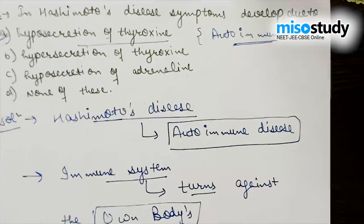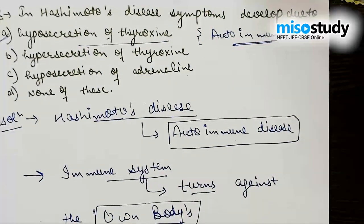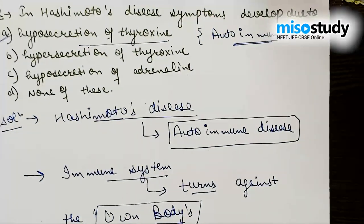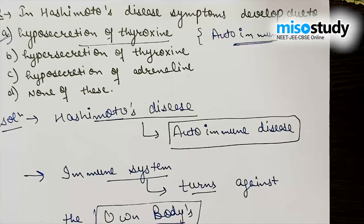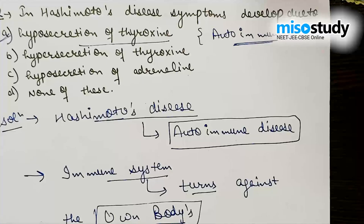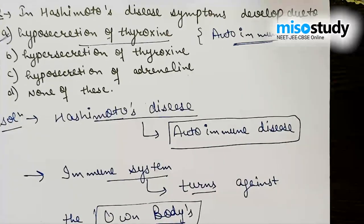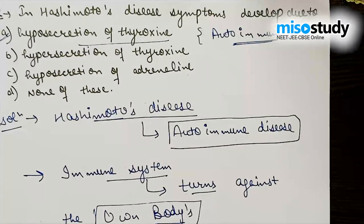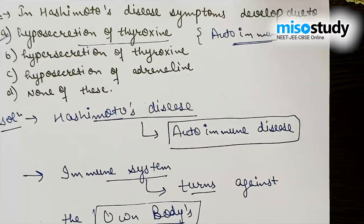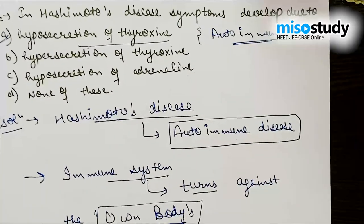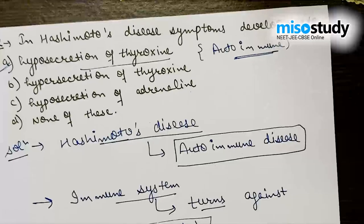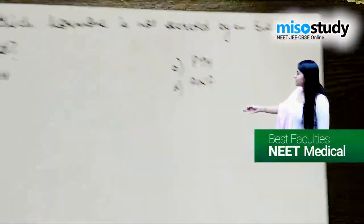Auto means self — patients suffering from Hashimoto disease have an immune system that cannot detect their own cells, secreting antibodies against their own cells. That's all about this portion; let's discuss another question from the same section.